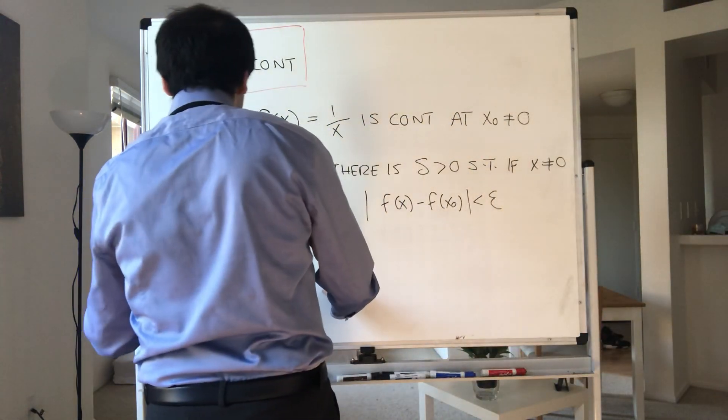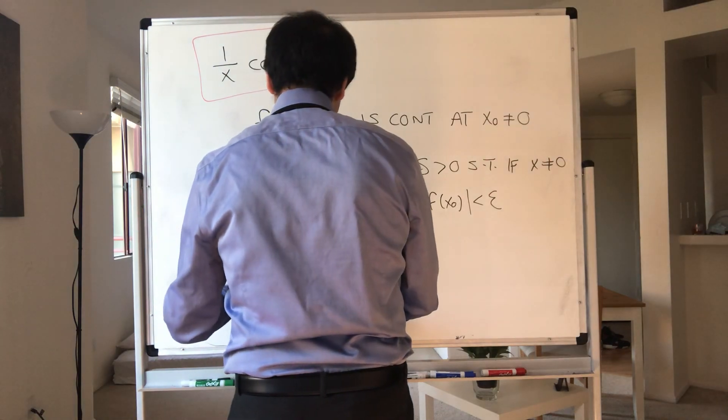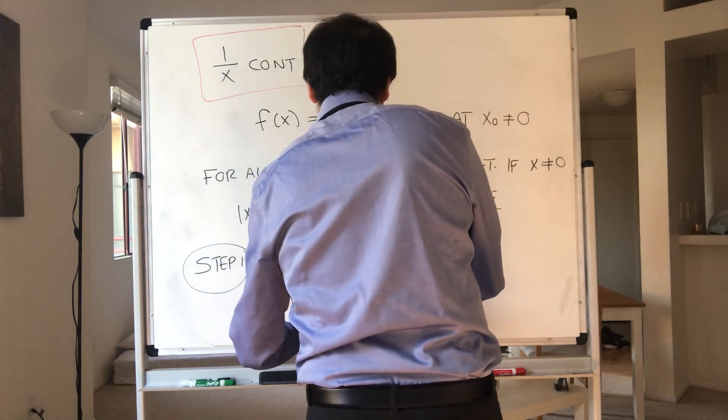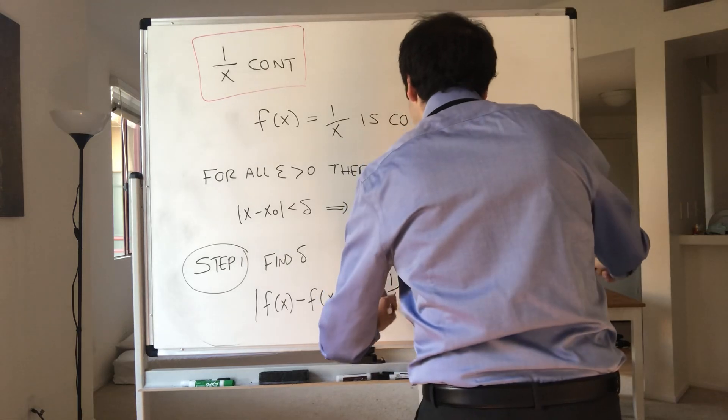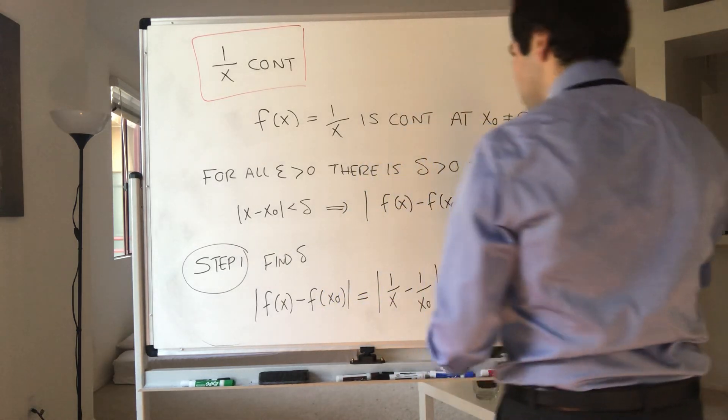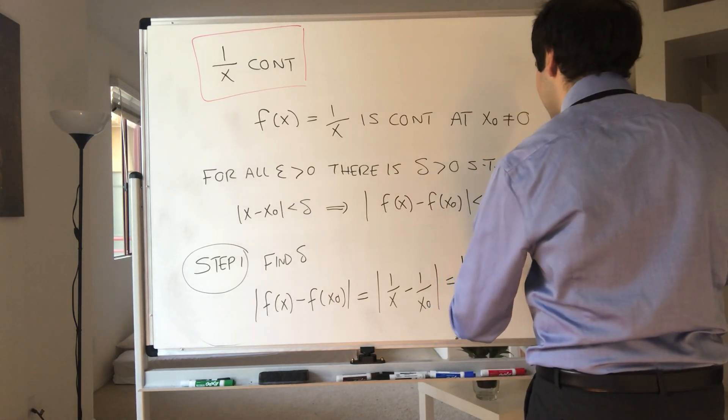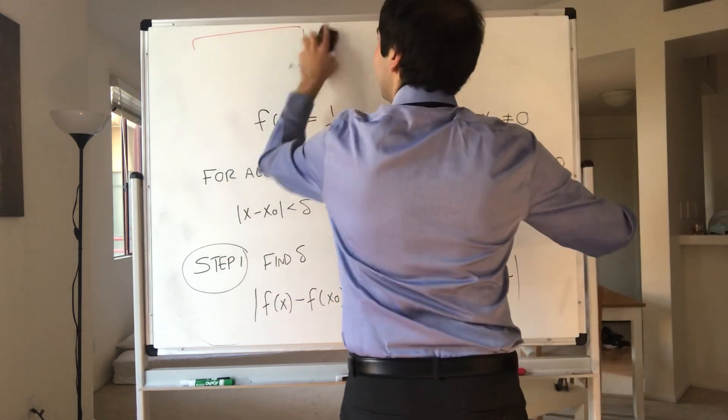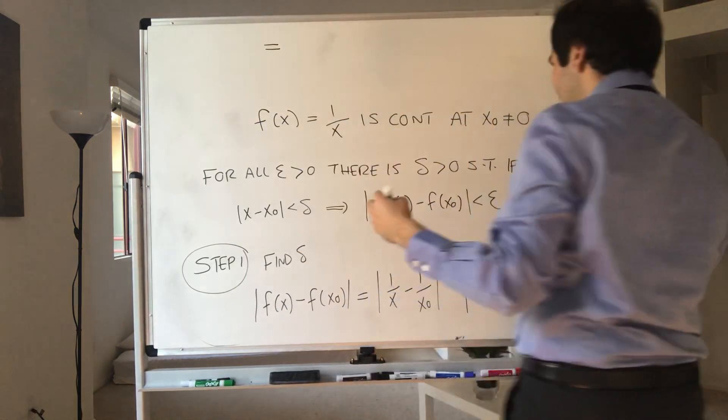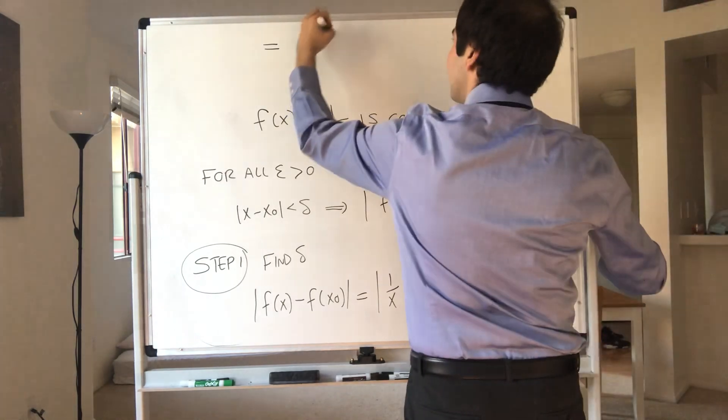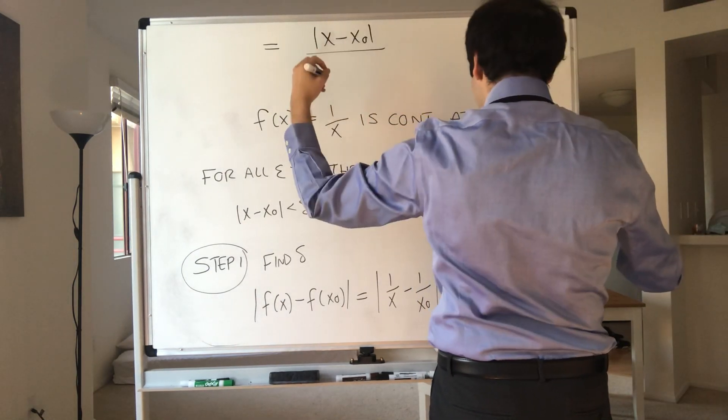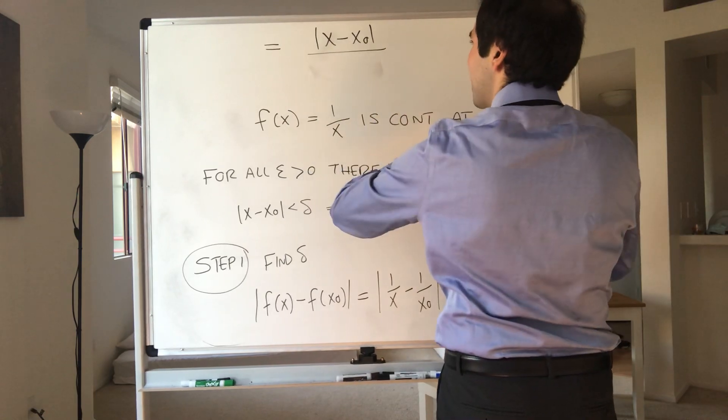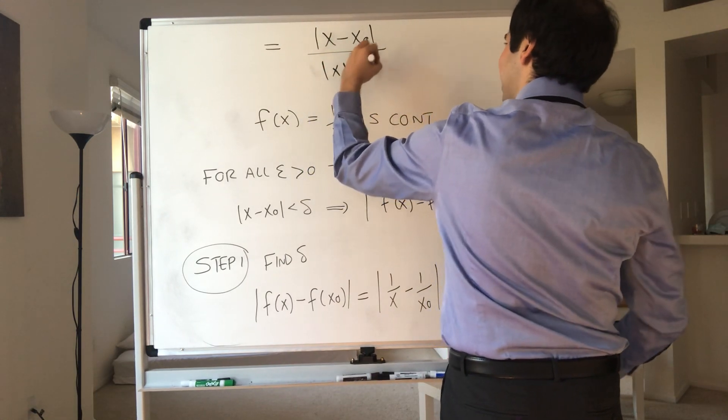Step one, let's find our delta. So let's try to estimate f(x) minus f(x naught). Well, that is one over x minus one over x naught, which just becomes, put it on a common denominator, x naught minus x over x times x naught. And then that becomes absolute value of x minus x naught over absolute value of x naught times absolute value of x.